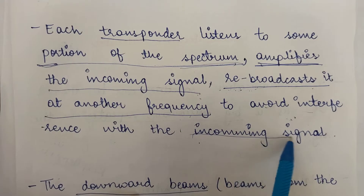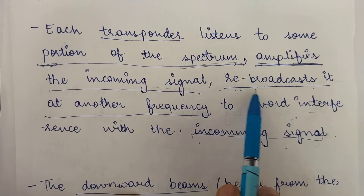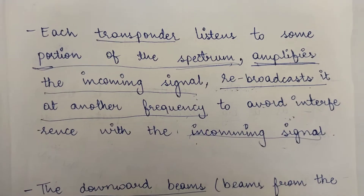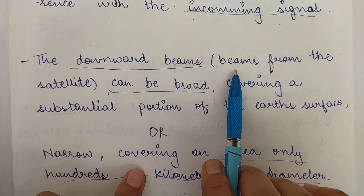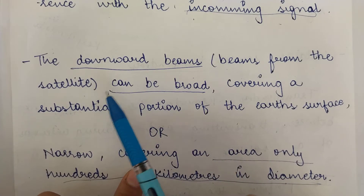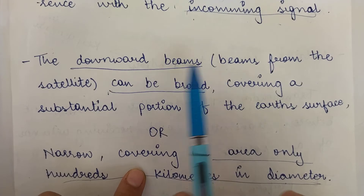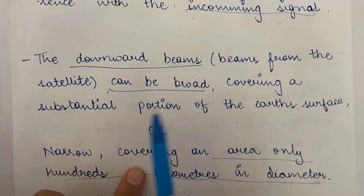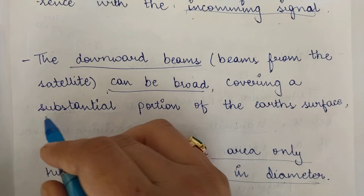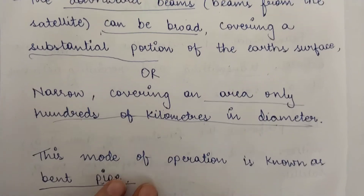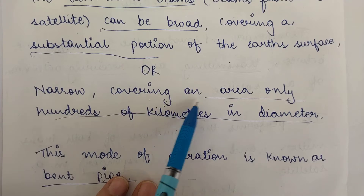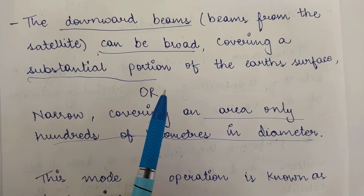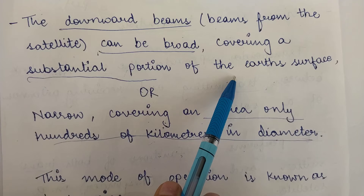There is a different frequency range for the incoming signals and a different frequency range for the signals being rebroadcast after amplifying. The downward beams are the beams transmitted from the communication satellite. These downward beams can be broad — broad enough to cover a substantial portion of the Earth's surface — or they can be narrow, covering only an area which is hundreds of kilometers in diameter.